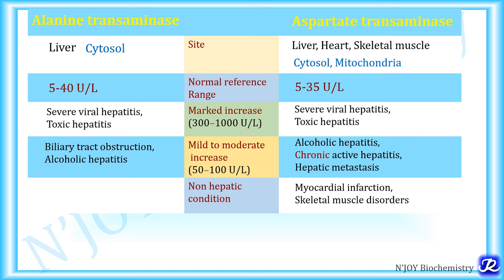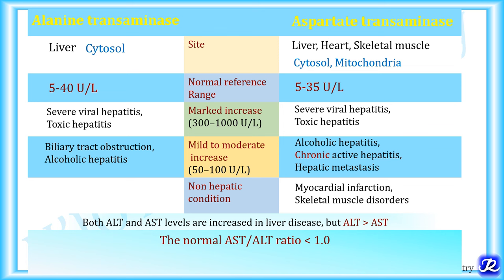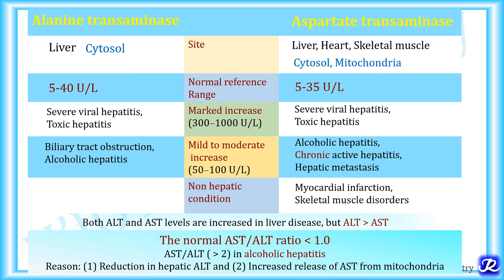Both ALT and AST levels are increased in liver disease, but the increase in ALT is normally more than the increase in AST. The normal AST to ALT ratio is less than 1. When this ratio is reversed and becomes more than 2, it denotes alcoholic hepatitis. The reason is due to reduction of hepatic ALT and increased release of AST from the mitochondria, because alcohol is a mitochondrial poison. In alcoholic hepatitis, the increase in AST is more than ALT, making the ratio greater than 2.